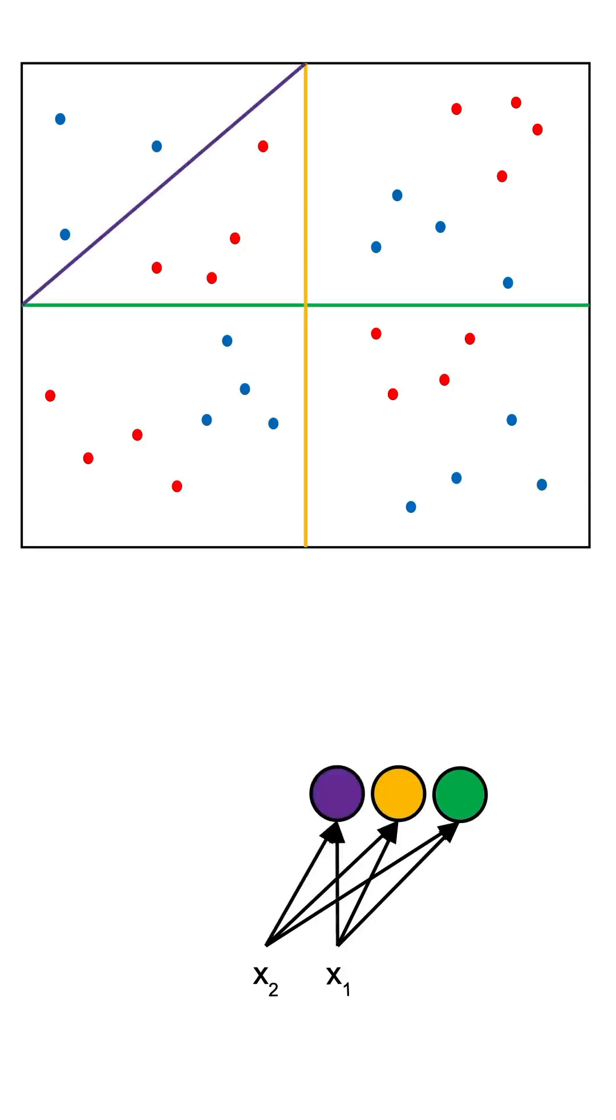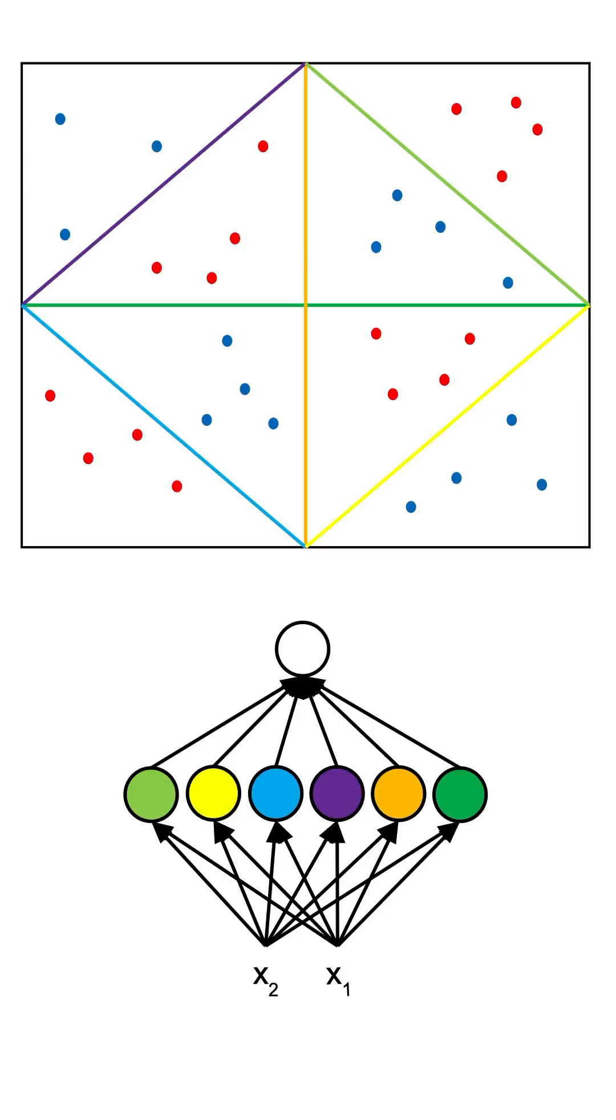To achieve that, we need 6 neurons on the first layer to classify each region and one on the second layer to distinguish between regions.